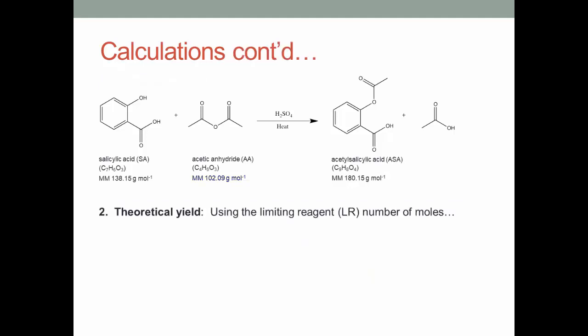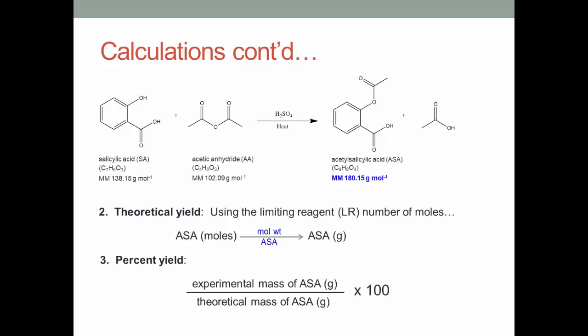Then you can find your theoretical yield using the limiting reagent number of moles. You take your moles of ASA from your limiting reagent, and using the molecular weight of ASA, you can go to the mass of ASA. Then, to find percent yield, you take your experimental mass of ASA, and divide it by your theoretical mass of ASA, and multiply it by 100.